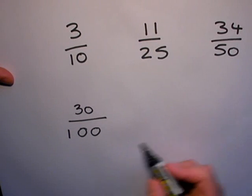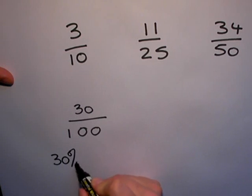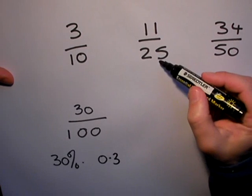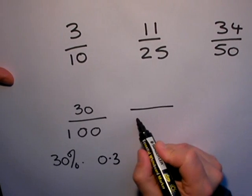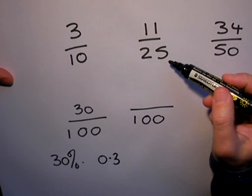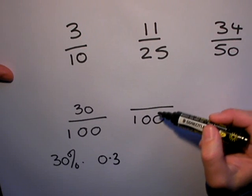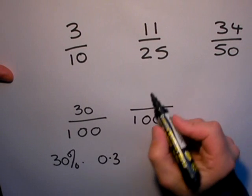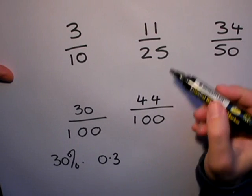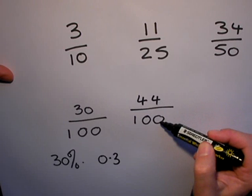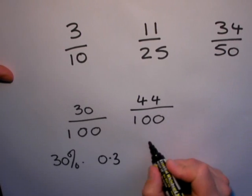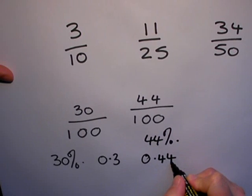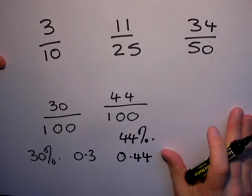Now 11 out of 25, I can turn that to a fraction out of 100 because 25 multiplied by 4 becomes 100. So if I multiply 25 by 4, I multiply 11 by 4 as well, I get 44. So this time 11 out of 25 is 44 out of 100, so I can write that as a percentage: 44% or 0.44.